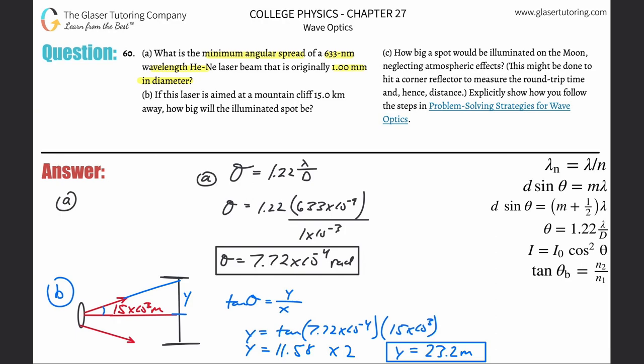Now it says how big a spot would be illuminated on the moon. So what we're going to do is basically just manipulate this. Instead of that distance, it's the distance to the moon. So this distance now is going to be about 3.84 times 10 to the eight meters. That's literally all that's going to change.